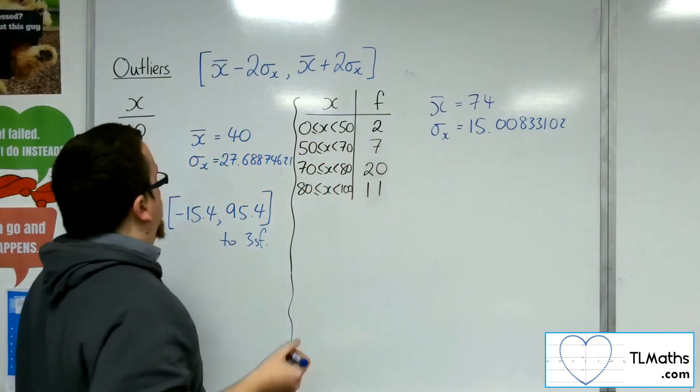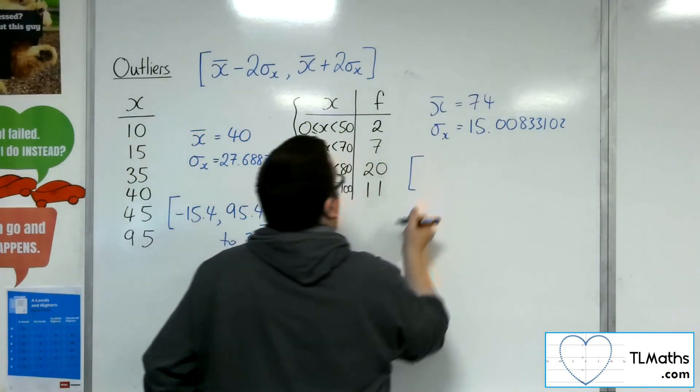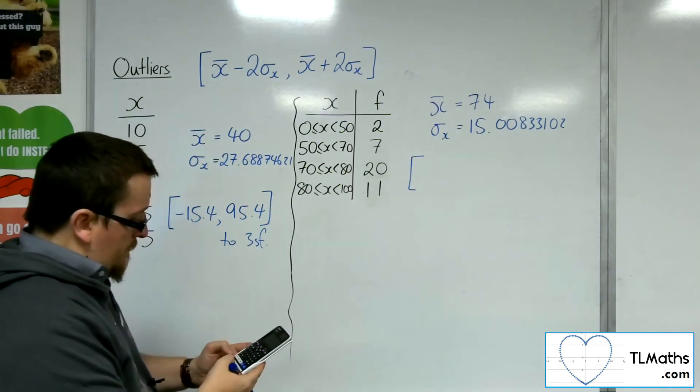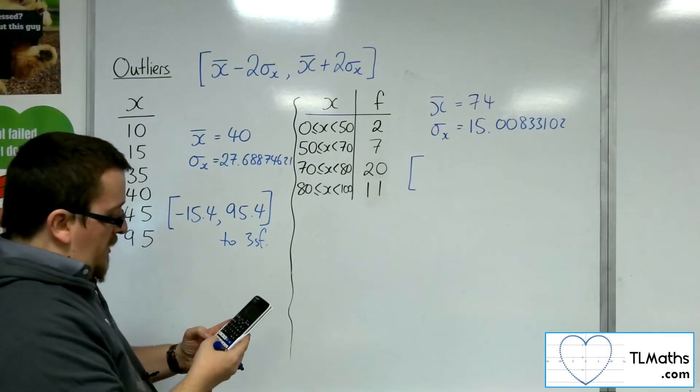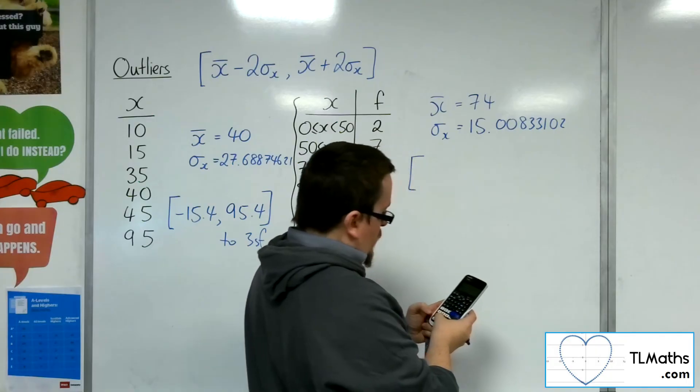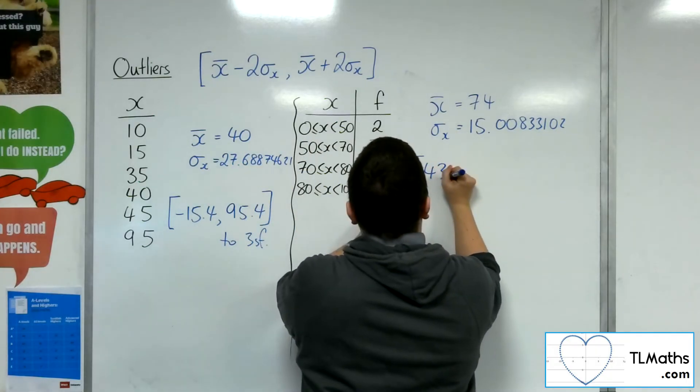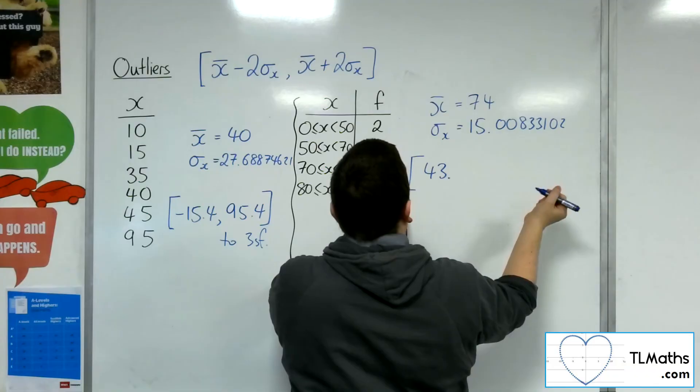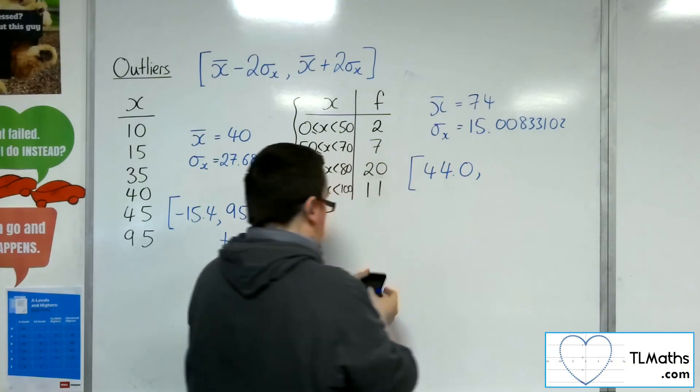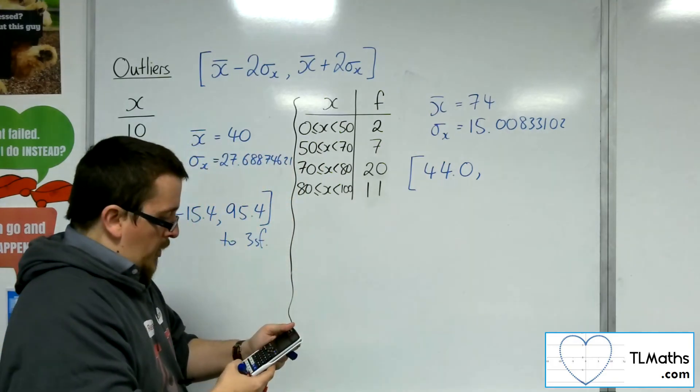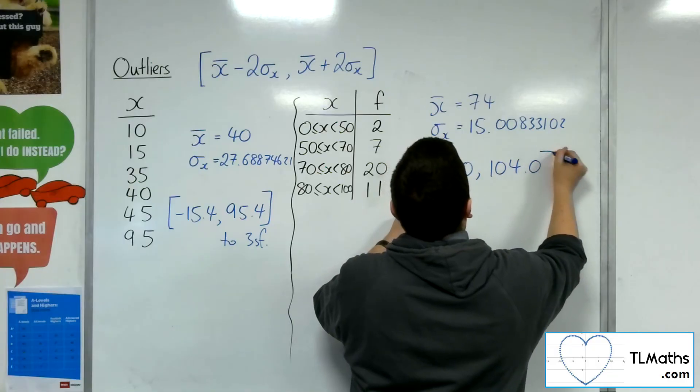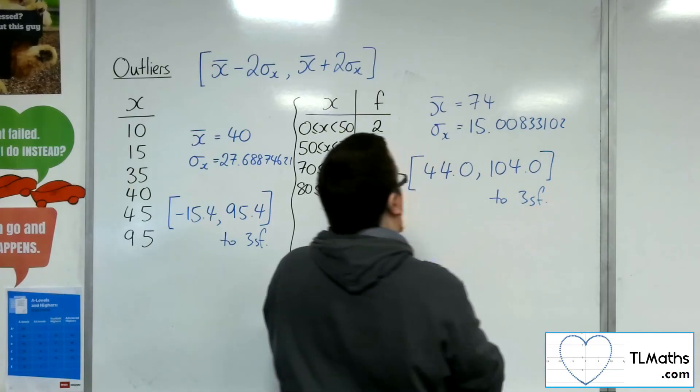Going back to the main computation bit on the calculator. 74, take away 2 lots of 15.00833102. So, I'll put it as 44.033102. And then change the minus to plus, 104.033102.